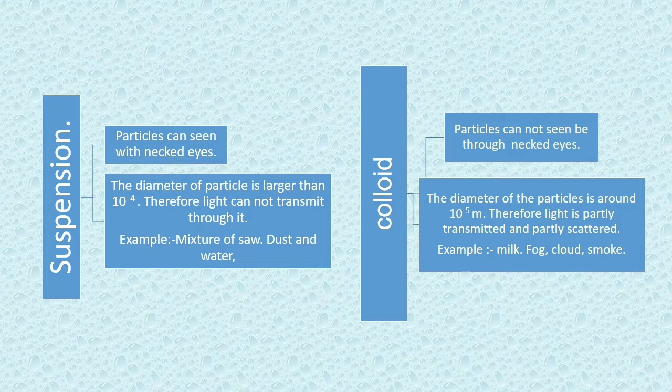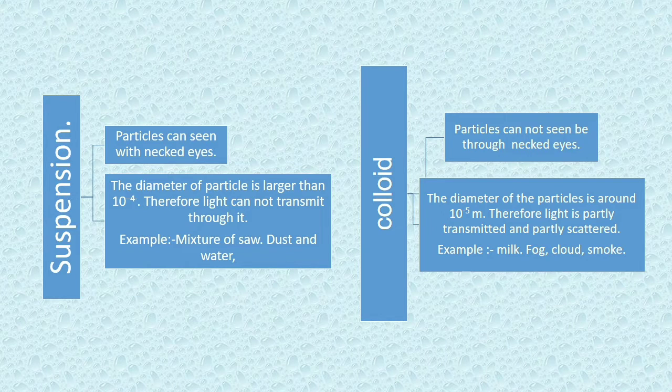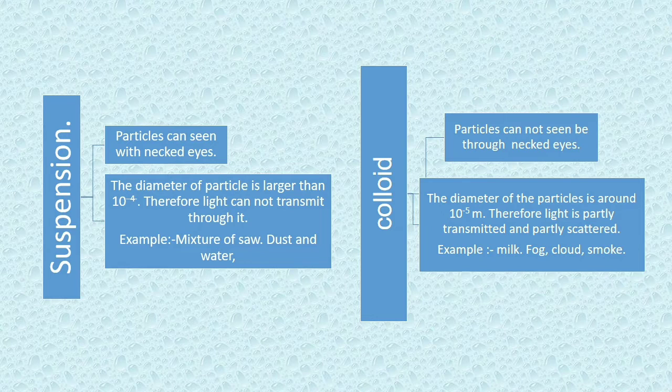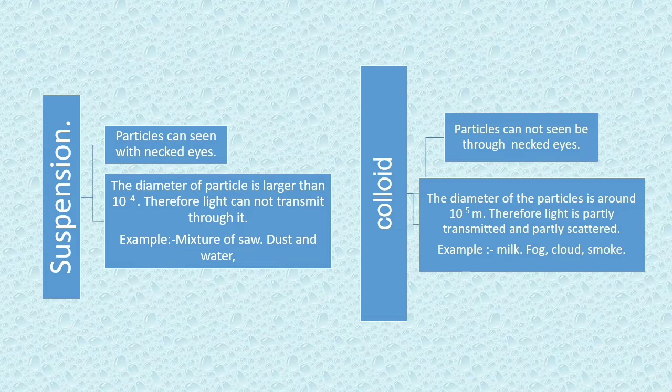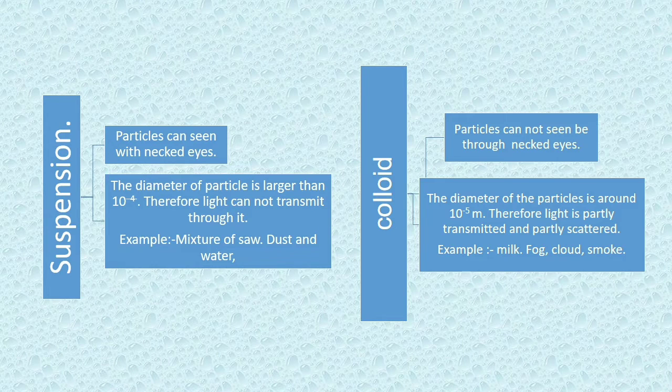The diameter of particle is larger than 10 raised to power minus 5 meter. Therefore, light is partly transmitted and partly scattered. For example, milk, fog, cloud, smoke, etc.